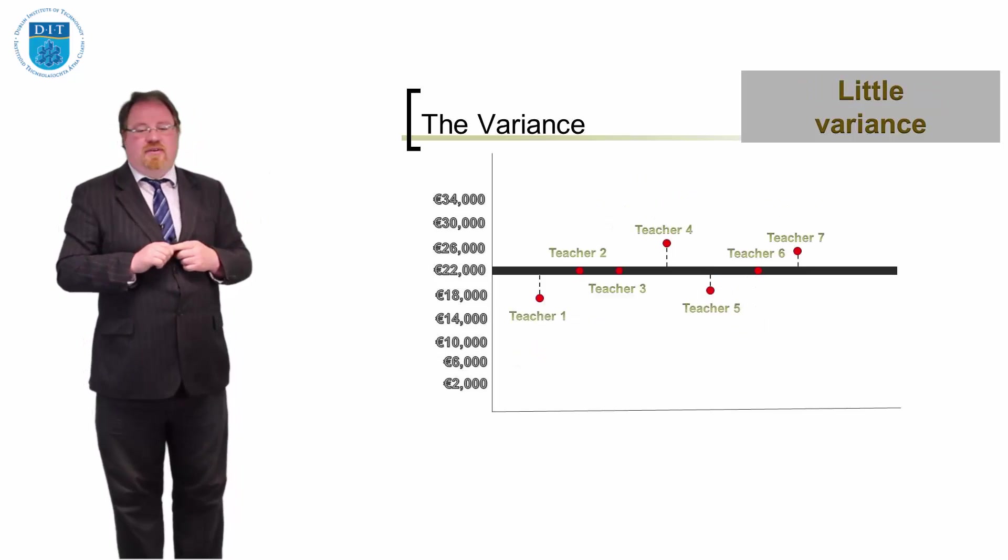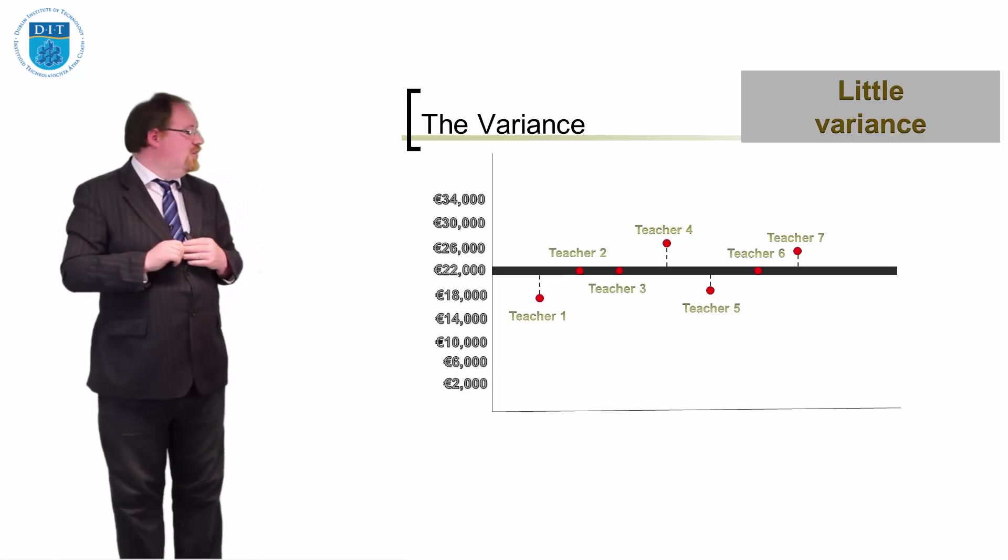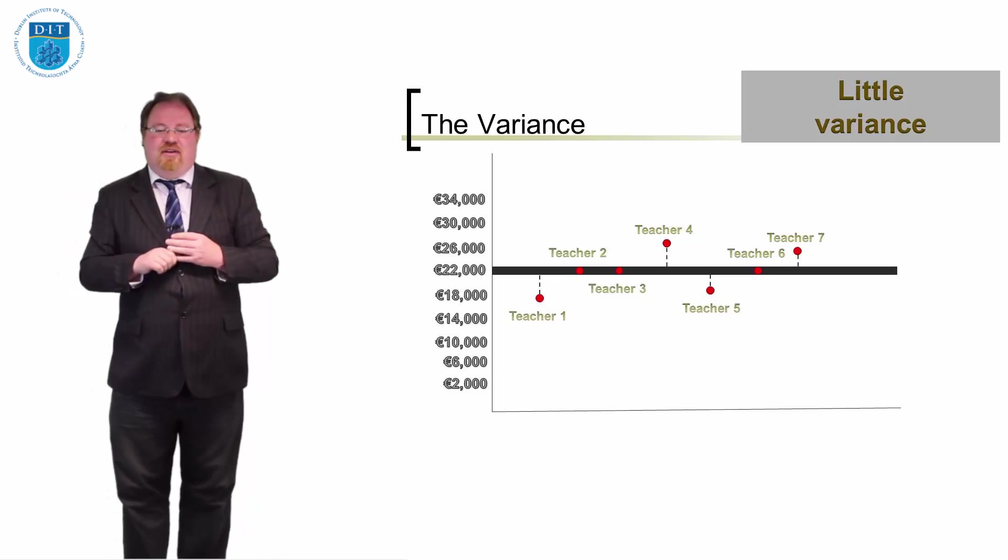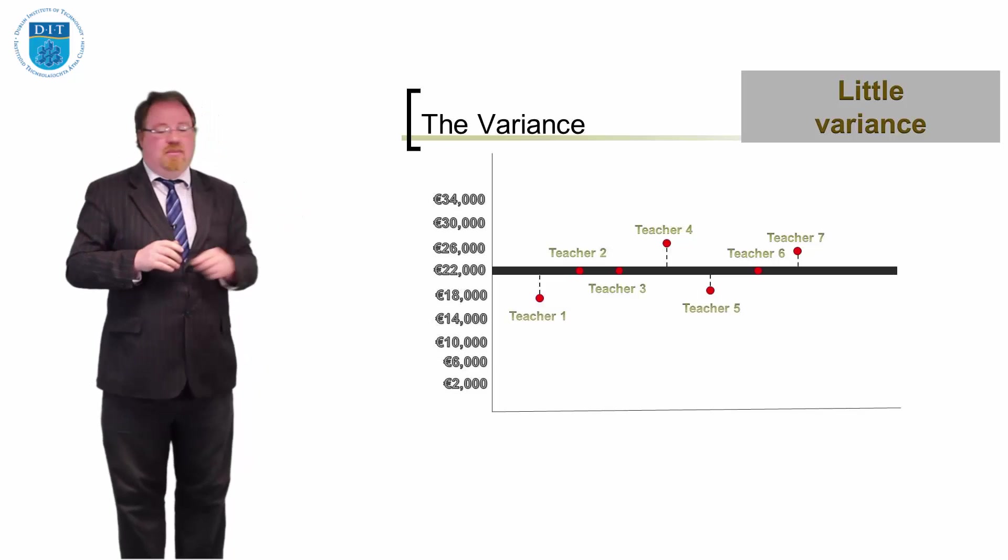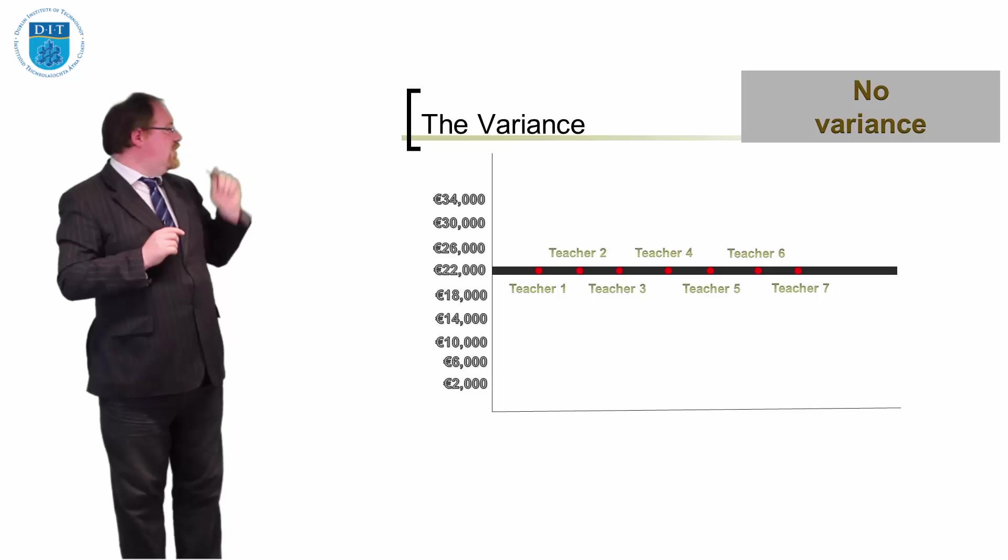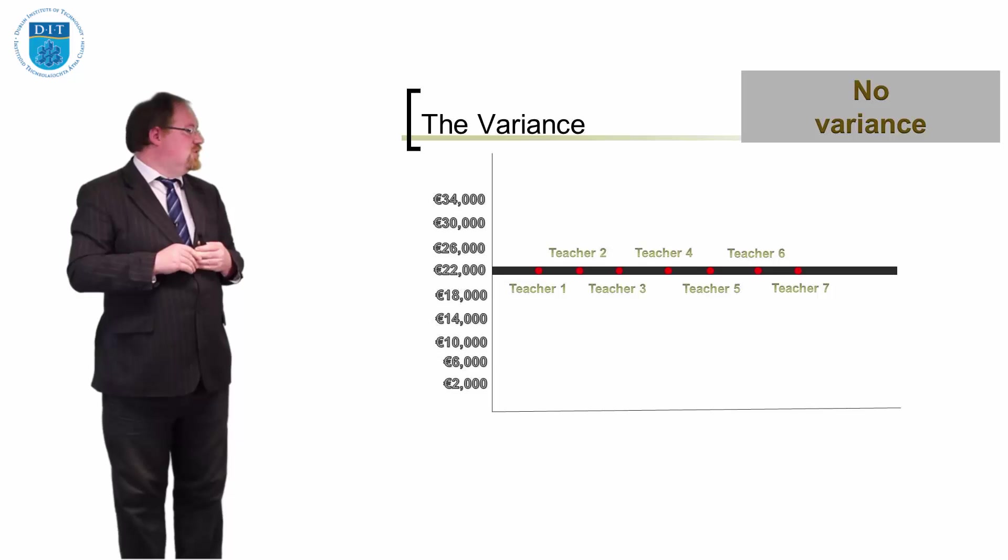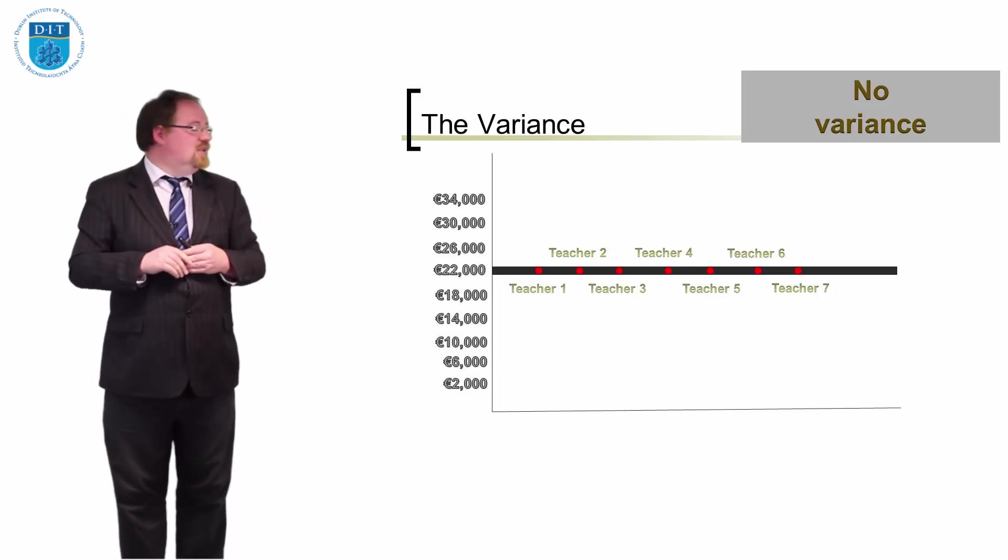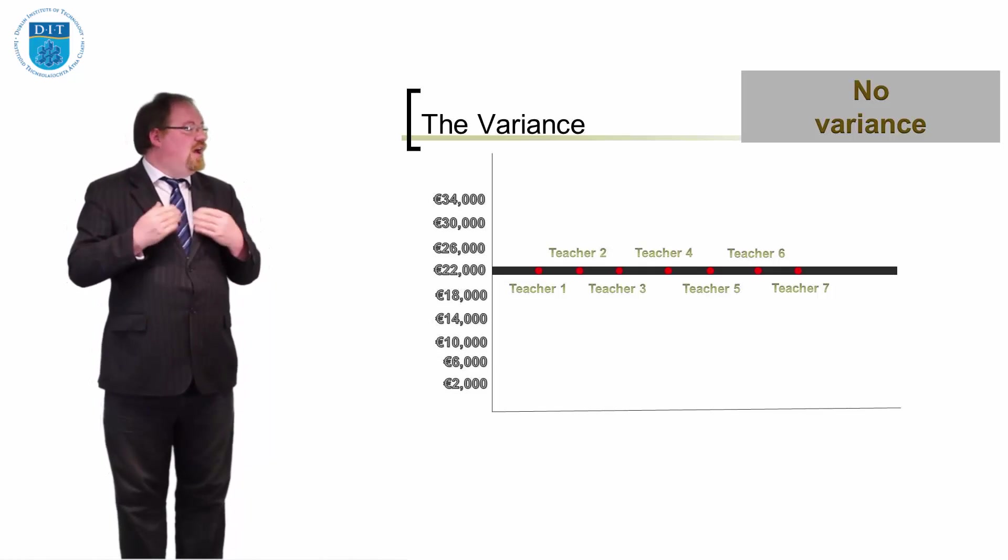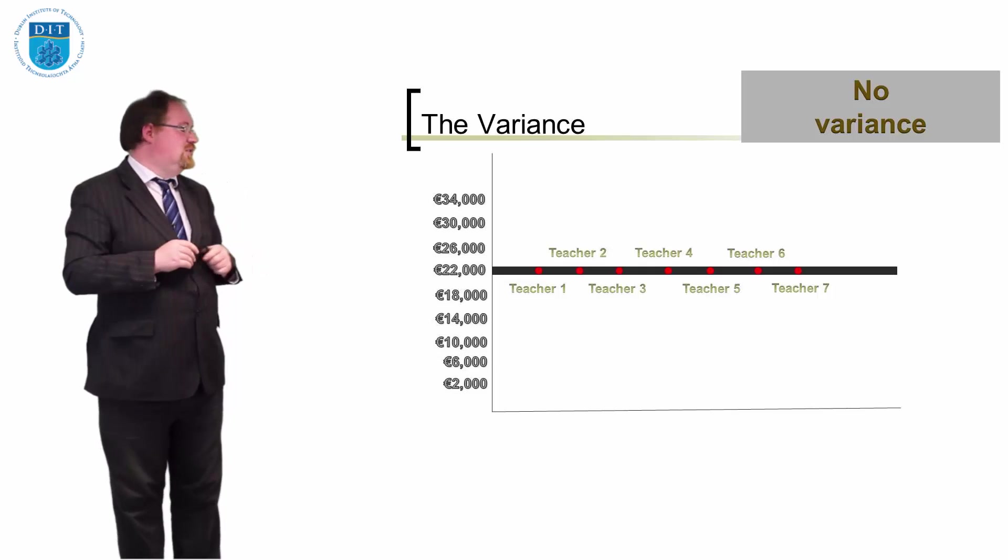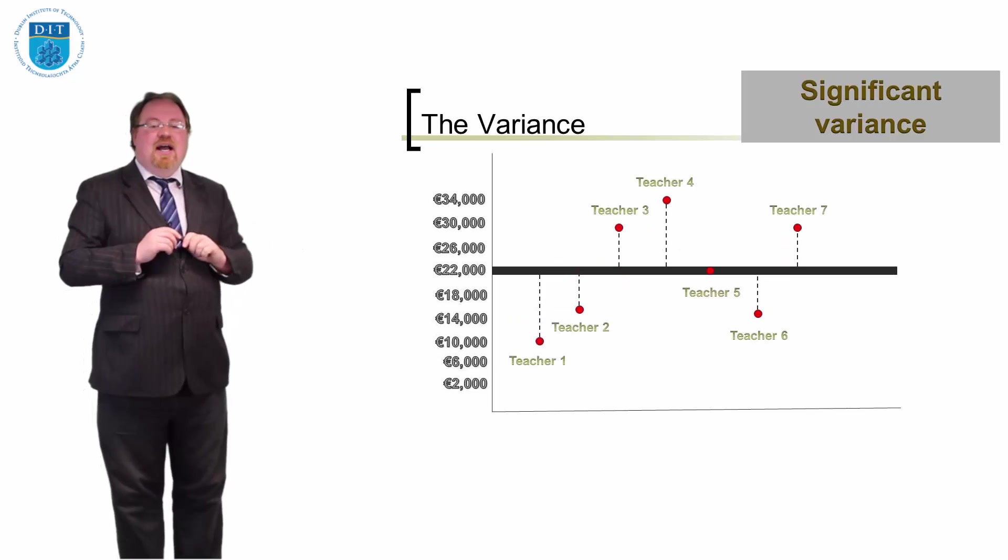If we look at this graph on the other hand, we can see here that there's less variation between real teacher salaries and the average teacher salary. There are three teachers who make 22,000 a year, a couple who make more than 22 and a couple who make less than 22. And finally, in this graph, there is no variance between the average salary, the mean salary, which is 22,000, and everybody's salary in the sample size. So all seven teachers make 22,000 a year and all seven teachers have a mean of 22,000.